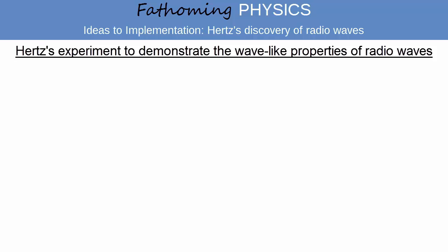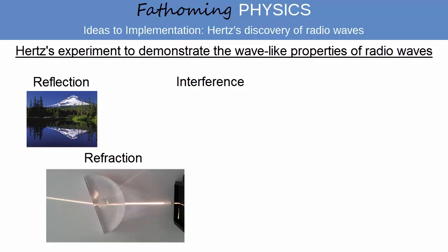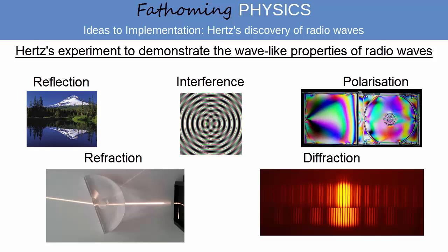In a further experiment reported in December 1888, Hertz demonstrated that all the properties of light and other types of waves, such as reflection, refraction, interference, diffraction and polarisation, could also be observed in radio waves.